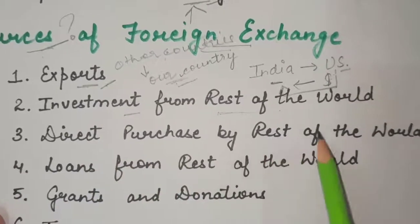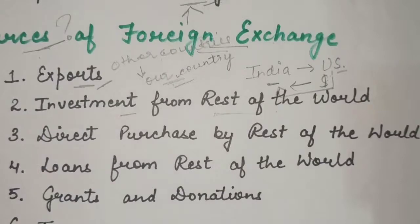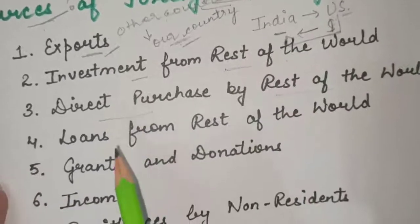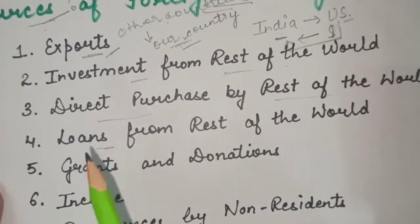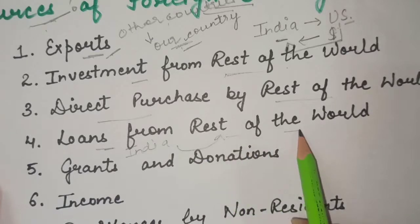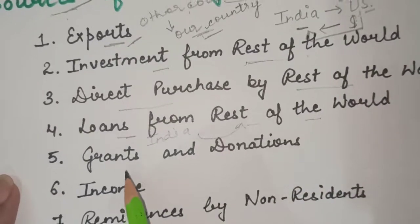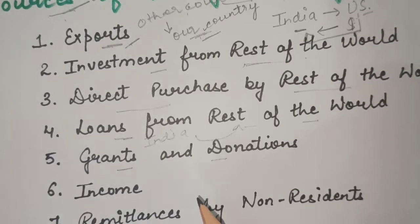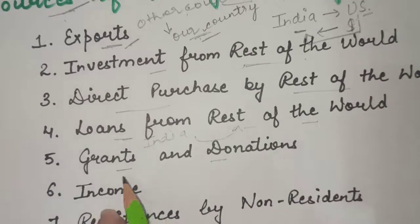Next is direct purchase by the rest of the world. Just as we go outside as tourists, people from the rest of the world also visit our country and make direct purchases, so we receive foreign exchange from that. Next is loans from the rest of the world — when India borrows money in the form of loans from the rest of the world, we get that money in the form of foreign currency. Next is grants and donations — whenever there is a tragedy or famine in our country, the rest of the world gives grants and donations, and through that we get foreign exchange.